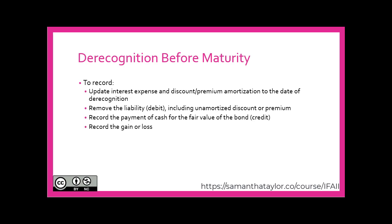In order to do that, we would update the interest expense to the date in which it's de-recognized and similarly calculate the bond discount and premium up until that date. We would remove the liability by debiting it. We would remove the related unamortized bond discount or premium by reversing it. We would record the outflow of cash, or perhaps if we settled it with another asset, an outflow of that other asset with a credit. The difference would be reflected in either a debit for a loss or a credit for a gain, both reflected on your income statement.